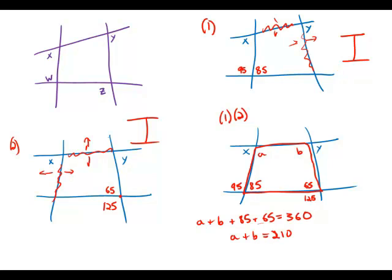Well that's interesting because I notice here, of course, x and a are supplementary, so x plus a is 180. Y and b, they're also supplementary, so y plus b is 180. So if we add those up, what we get is that x plus y plus a plus b equals 360.